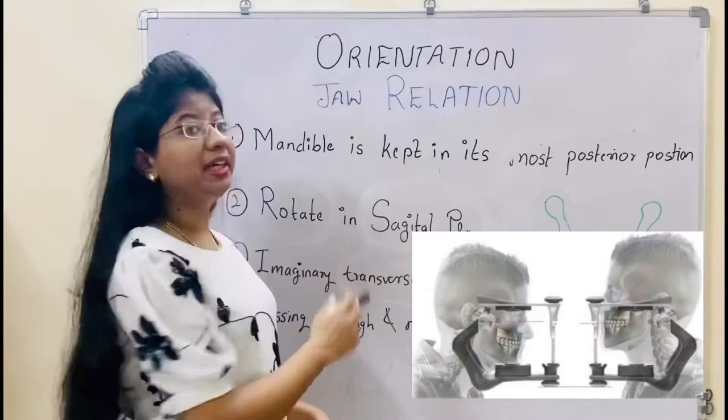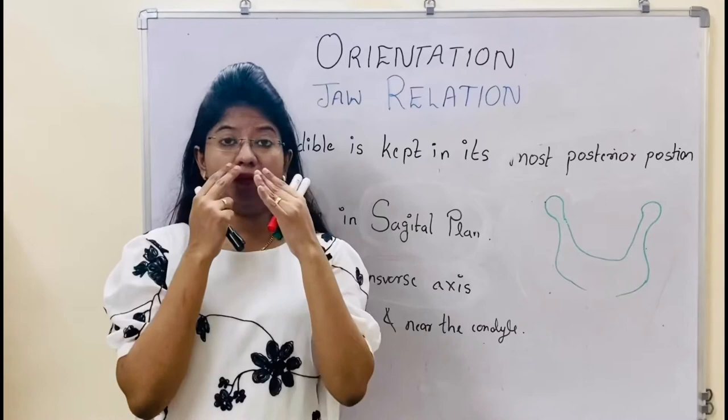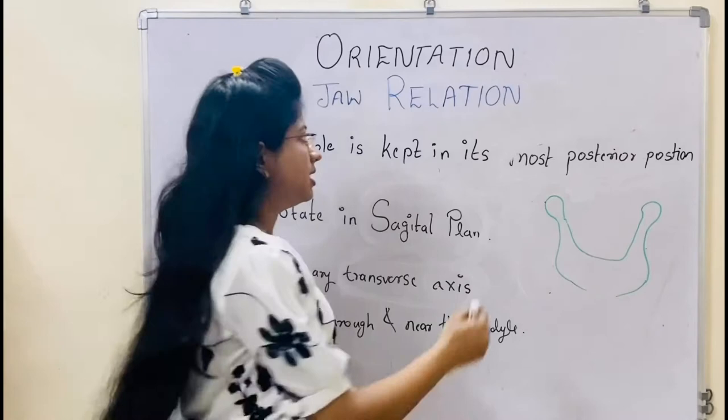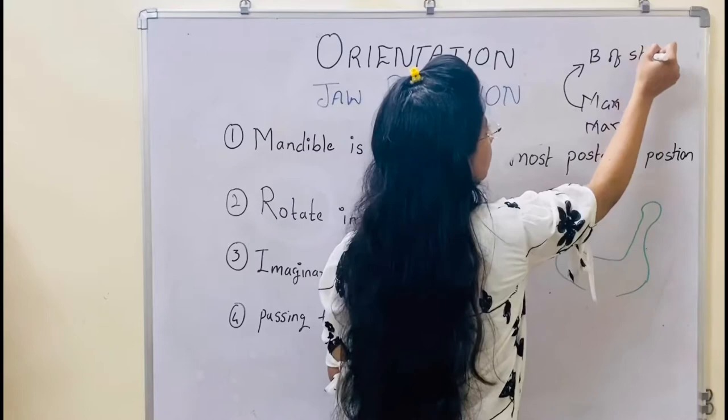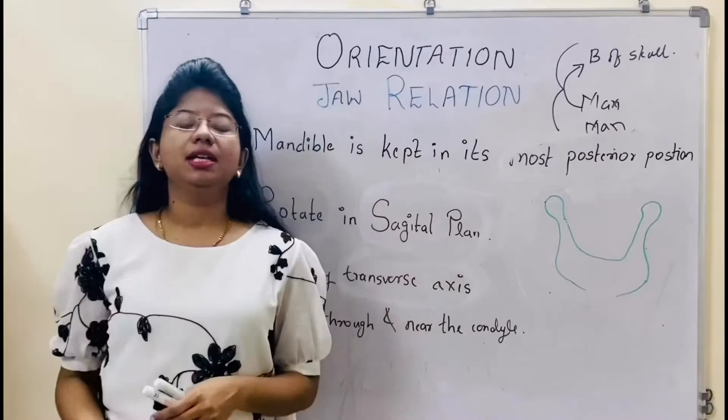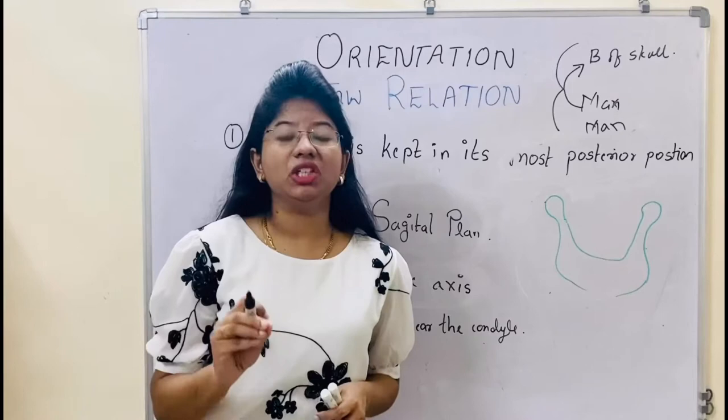As we all know, jaw relation is any relation of maxilla to the mandible. Then what is orientation relation? Similarly, as the maxilla has some relation to the mandible, the maxilla also has some relation to the base of the skull. So these are all interconnected. The maxilla's relation to the base of the skull is recorded in orientation relation.